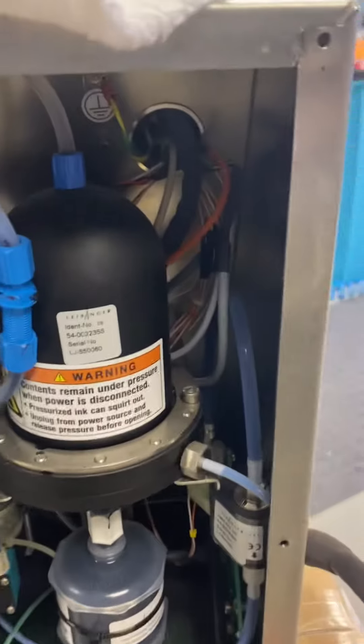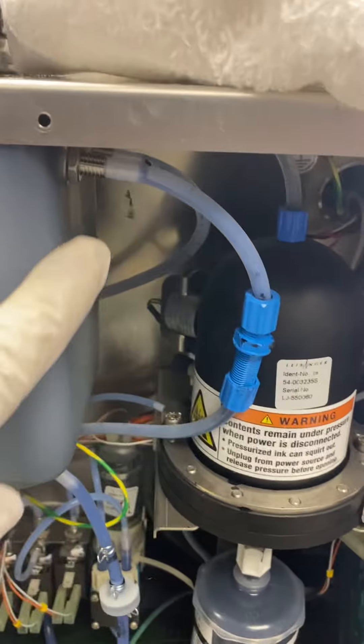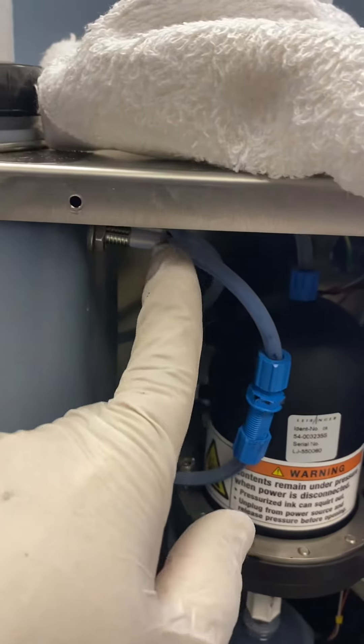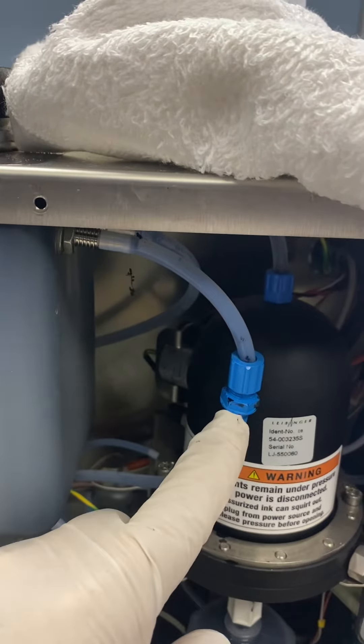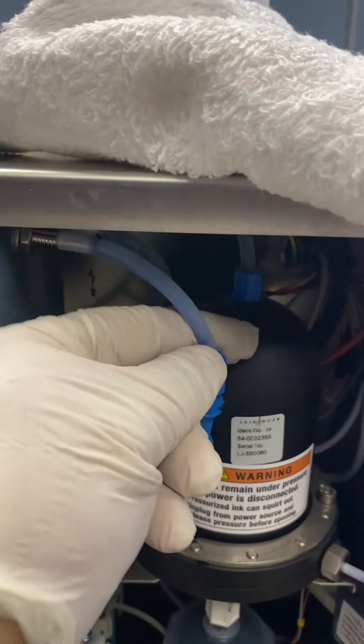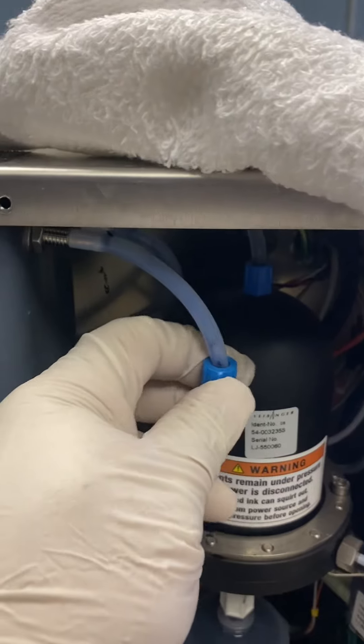This hose coming out from the ink tank - we need to remove the tap connector.